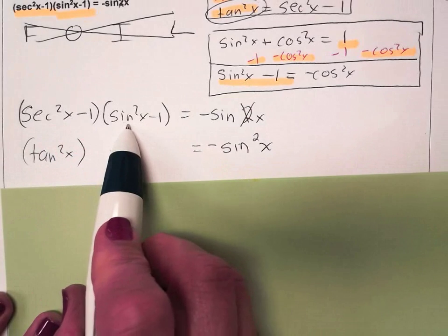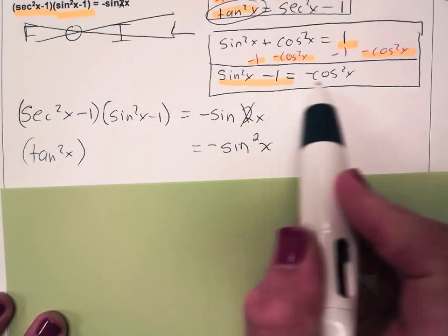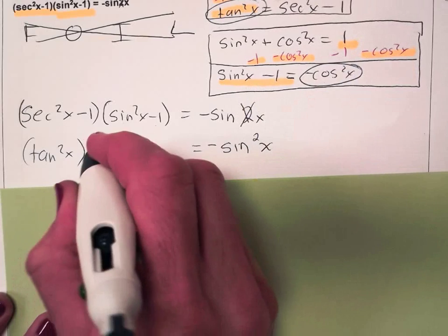And then we can replace sin²x - 1 with -cos²x.